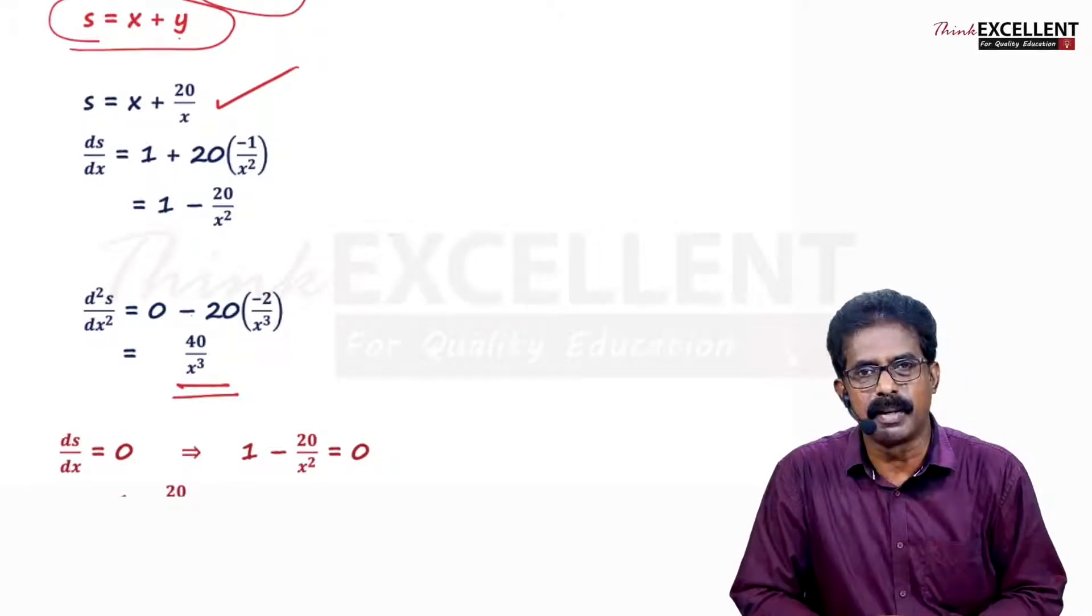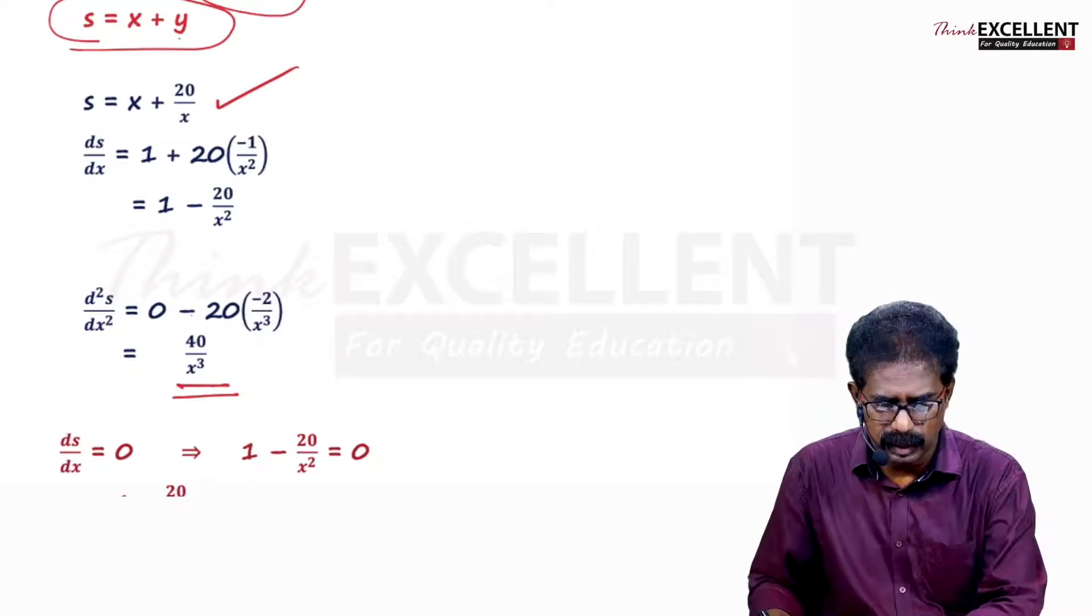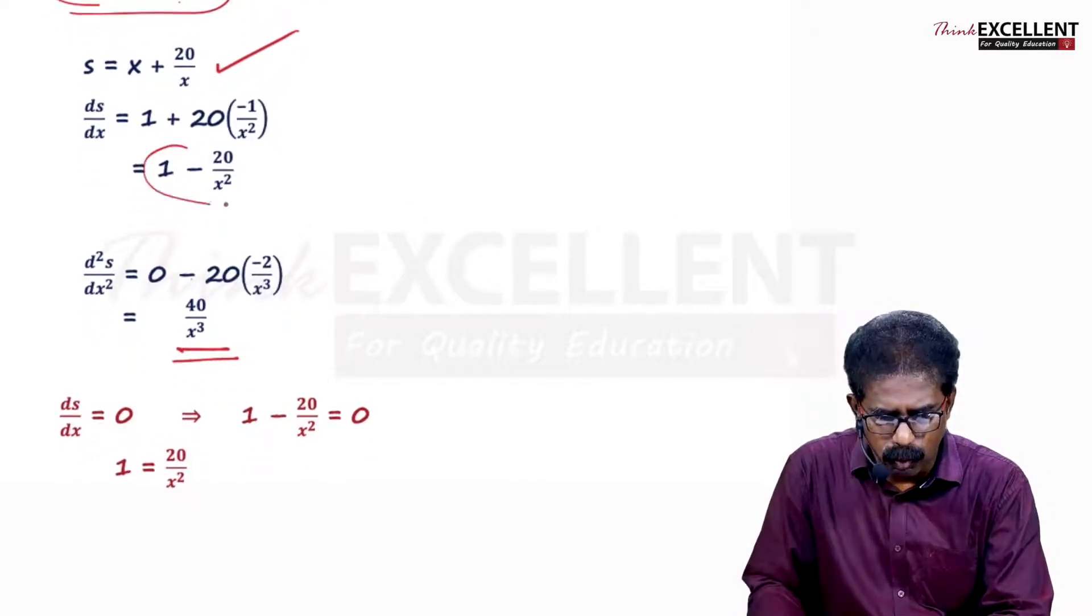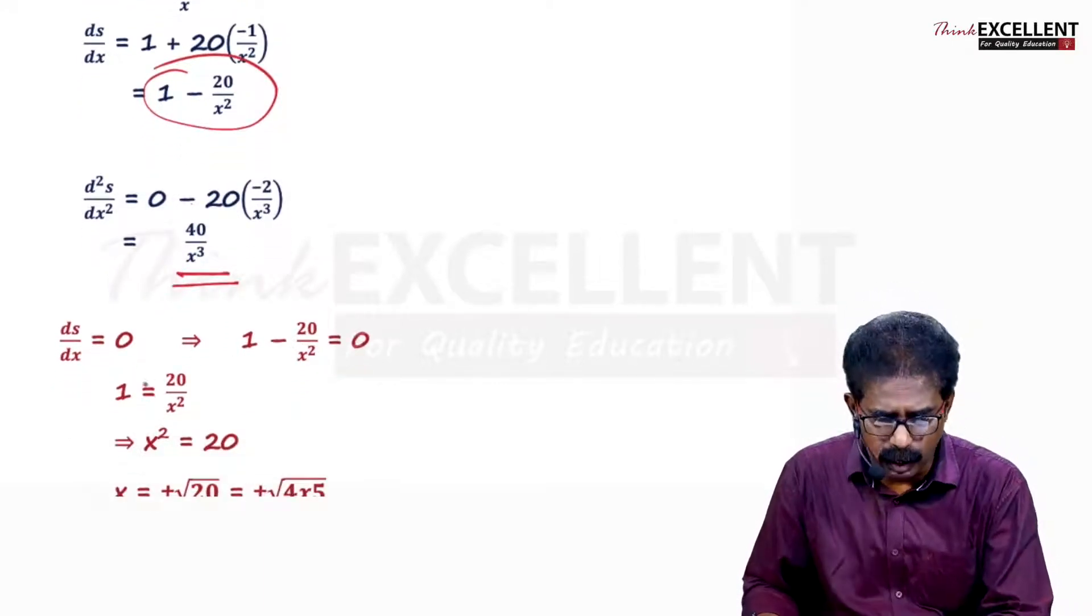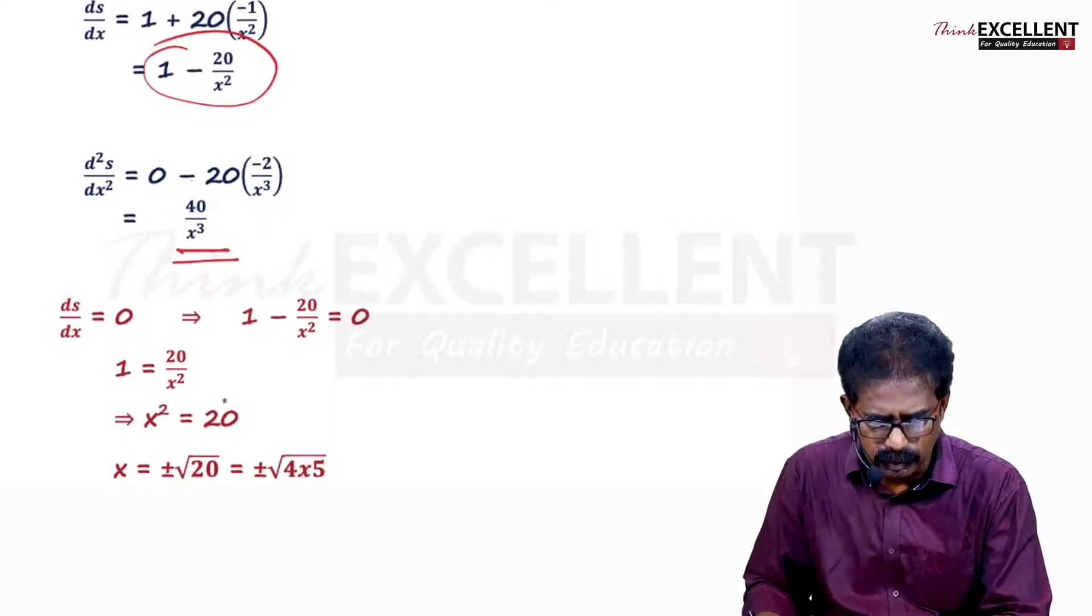Now we have to find the stationary point. Equate the first derivative with 0. So ds by dx equals 0. What is ds by dx? 1 minus 20 by x square equals 0. Take the negative term to the right side. 1 equals 20 by x square. Cross multiply. x square equals 20.